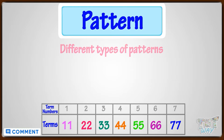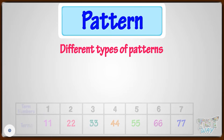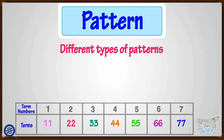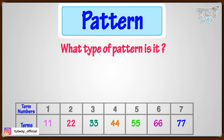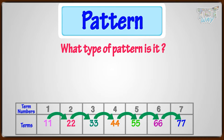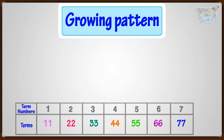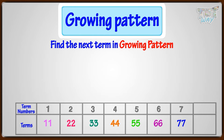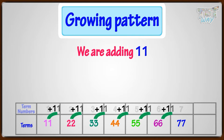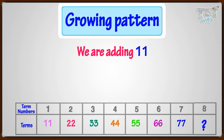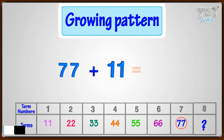Now let's learn different types of patterns. Kids, here is a pattern. Can you see and tell what type of pattern it is? Here, the numbers are growing or increasing with each successive term, so it's a growing pattern. What should be the next term in this growing pattern? Here, with every successive term, we are adding 11 to the term. So to find the next term, or the 8th term, we will add 11 to 77. 77 plus 11, we get 88. So the 8th term would be 88.